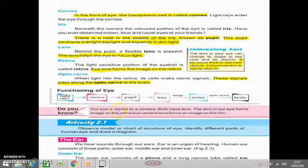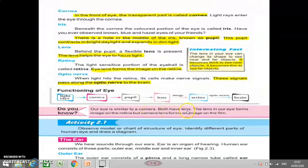Next is do you know? Our eye is similar to camera. Our eye is like a camera. Both have lens. Both have a lens present. The lens in our eye forms image on the retina, but camera lens forms an image on the film. The lens inside our eye makes an image on the retina. The lens inside the camera makes an image on the film or screen inside it. Here on the side a box is given, look at this. Interesting fact.